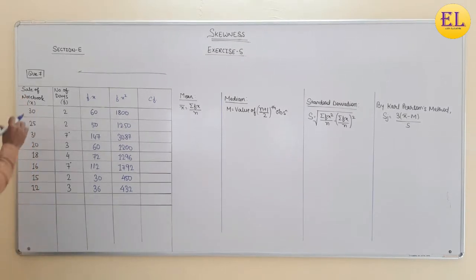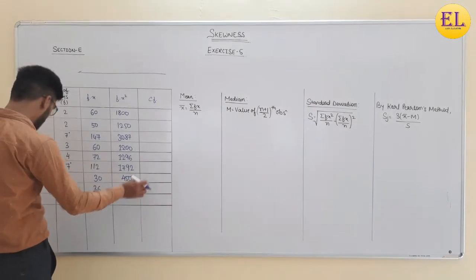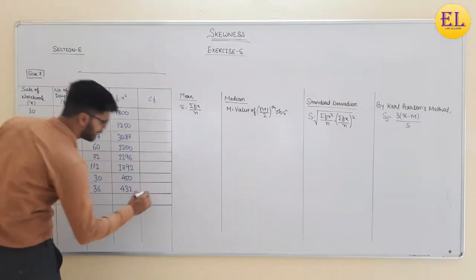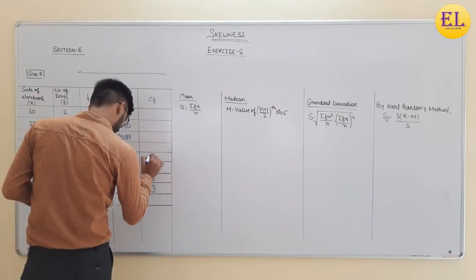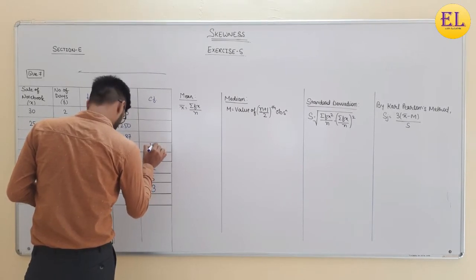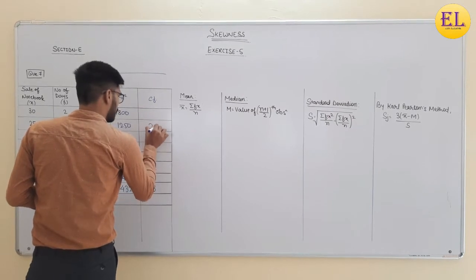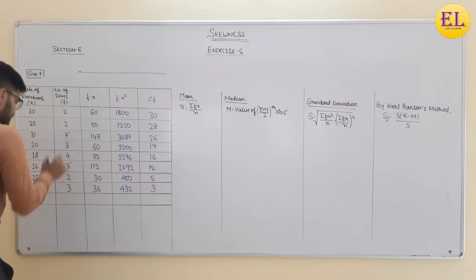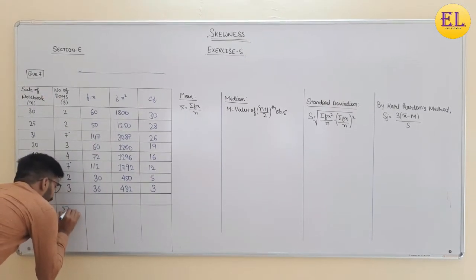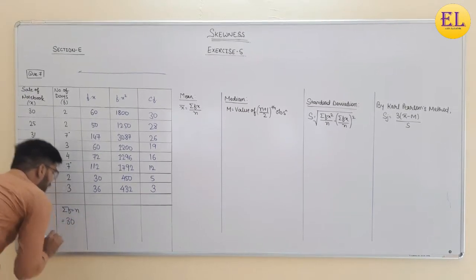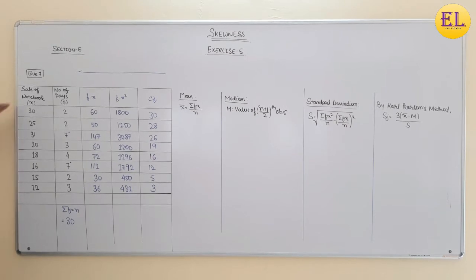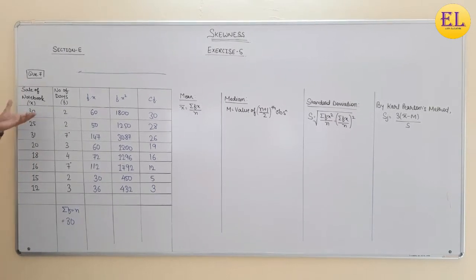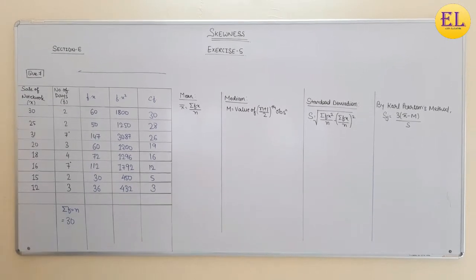So first of all, the cumulative frequency is going down. So we need to start down. Here is 3, then 3 plus 2 is 5, 5 plus 7 is 12, then 16, 19, 26, 28, and 30. The summation of frequency which we say n is also 30. Here the data is actually higher to lower side, so first you can write it lower to higher in exam, there is no problem. We have to make this table.